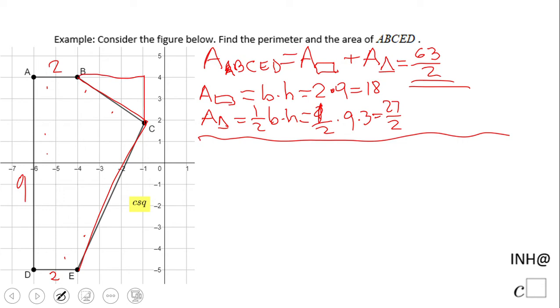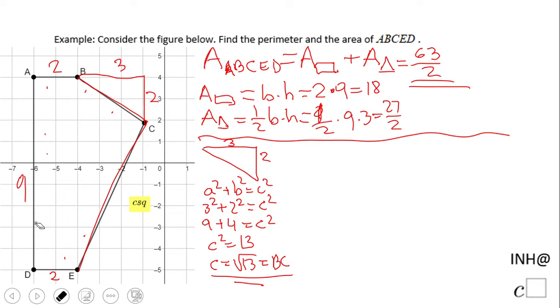We're going to use the Pythagorean theorem. The first triangle has sides 3 and 2. So a² + b² = c². Three squared plus two squared equals c squared: 9 + 4 = c². So c² equals 13, which means c equals √13. That's BC.